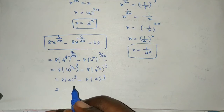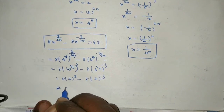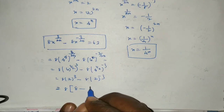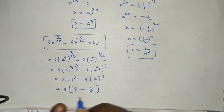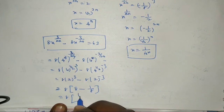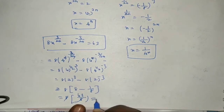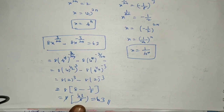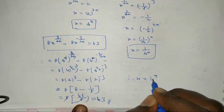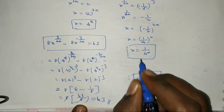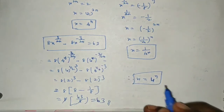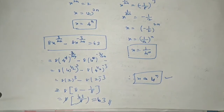Checking x equal to 1 by 4^n, substituting into the equation does not give RHS equal to 63. So that is not the solution. Therefore x equal to 4^n is the valid solution.